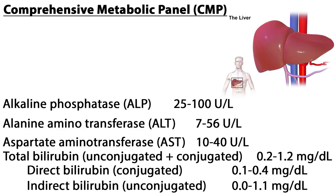Tests specific to the liver include ALP, ALT, AST, and bilirubin. ALP, or alkaline phosphatase, is an enzyme found in the liver and bones and is used to help detect liver disease or bone disorders; normal range is 25 to 100 units per liter. ALT, or alanine aminotransferase, is an enzyme found mostly in liver and kidney cells. When the liver is damaged, ALT is released into the blood, making this test useful for early detection of liver damage; normal range is 7 to 56 units per liter.